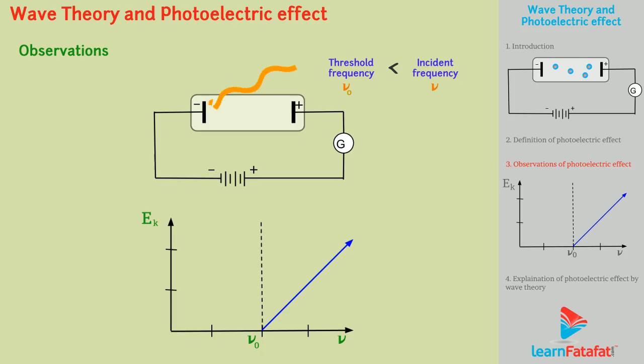With the increase in frequency beyond threshold frequency of the incident light, photoelectric effect occurs. Higher the frequency of light beam, greater will be the speed of electrons and so higher will be their kinetic energy.